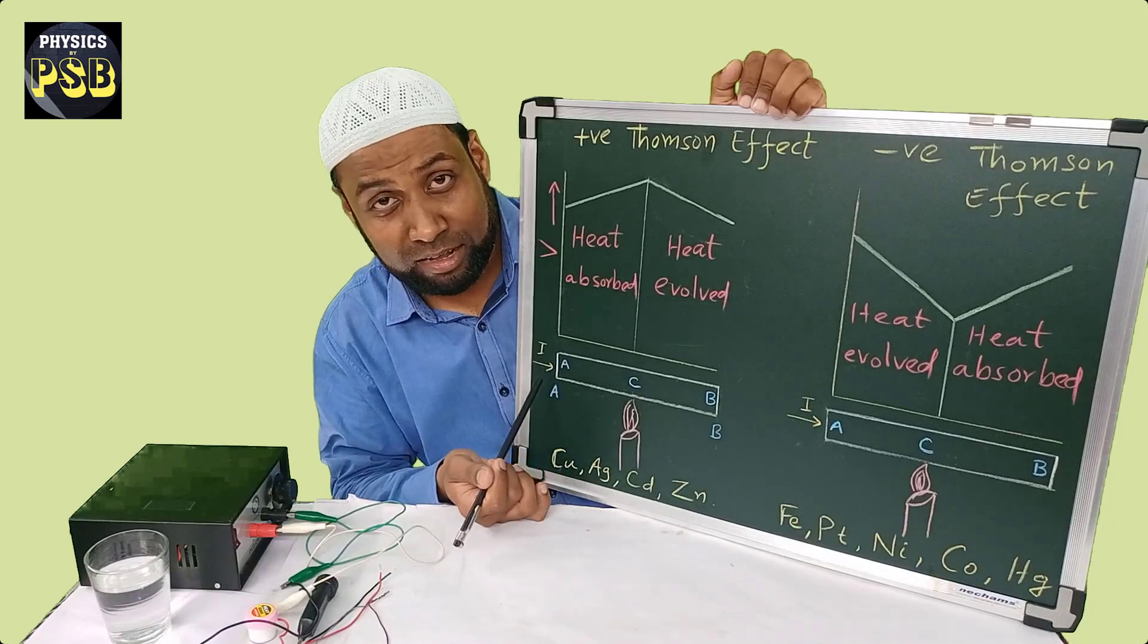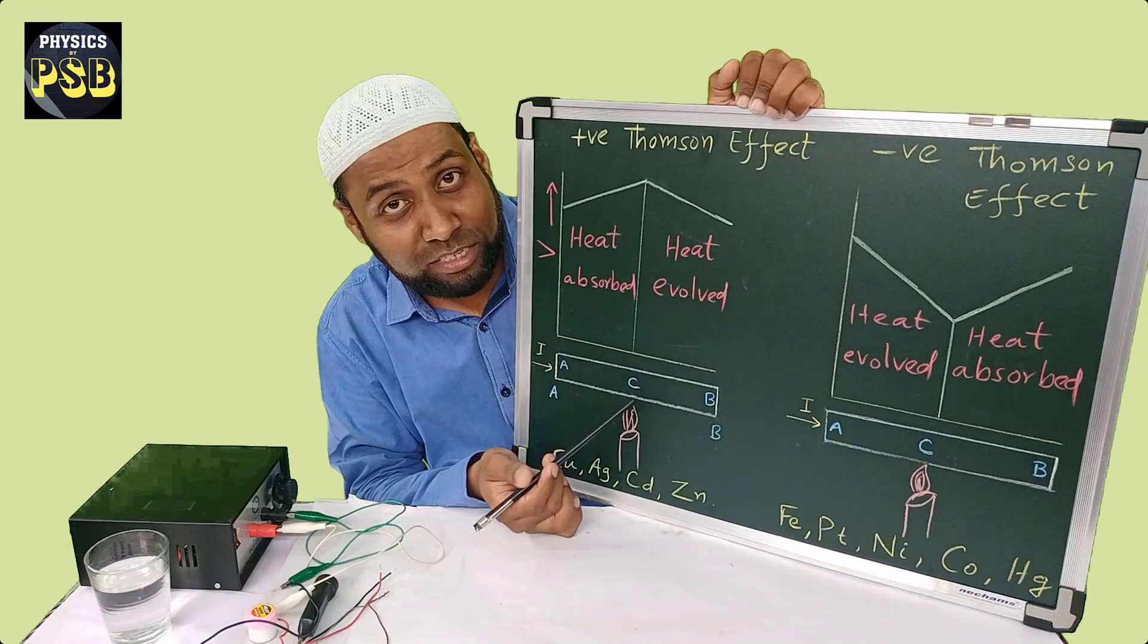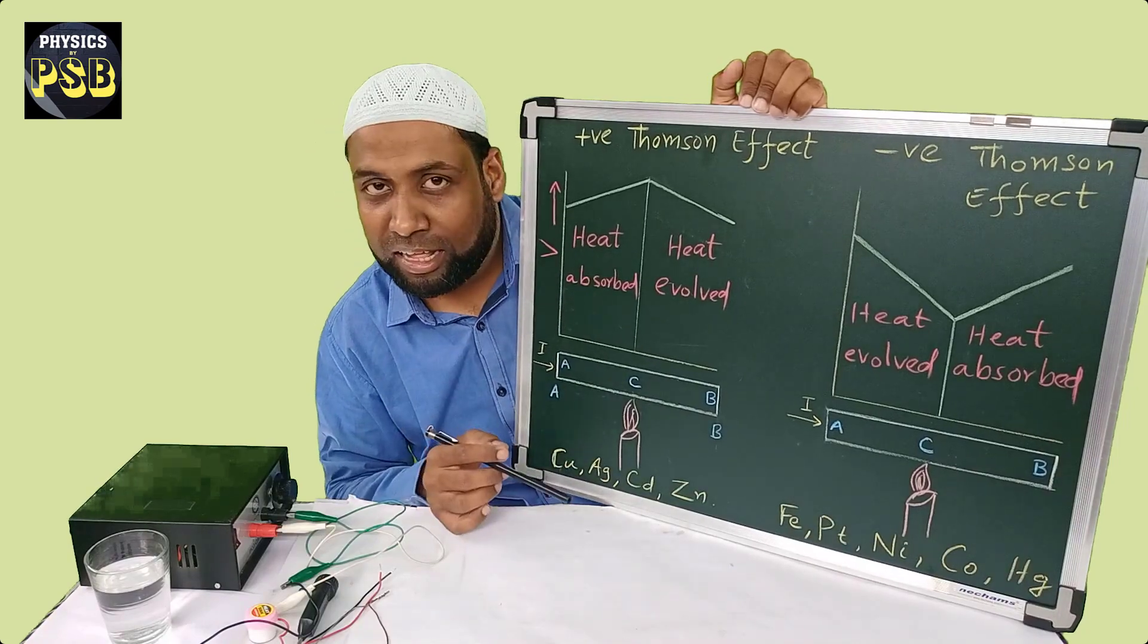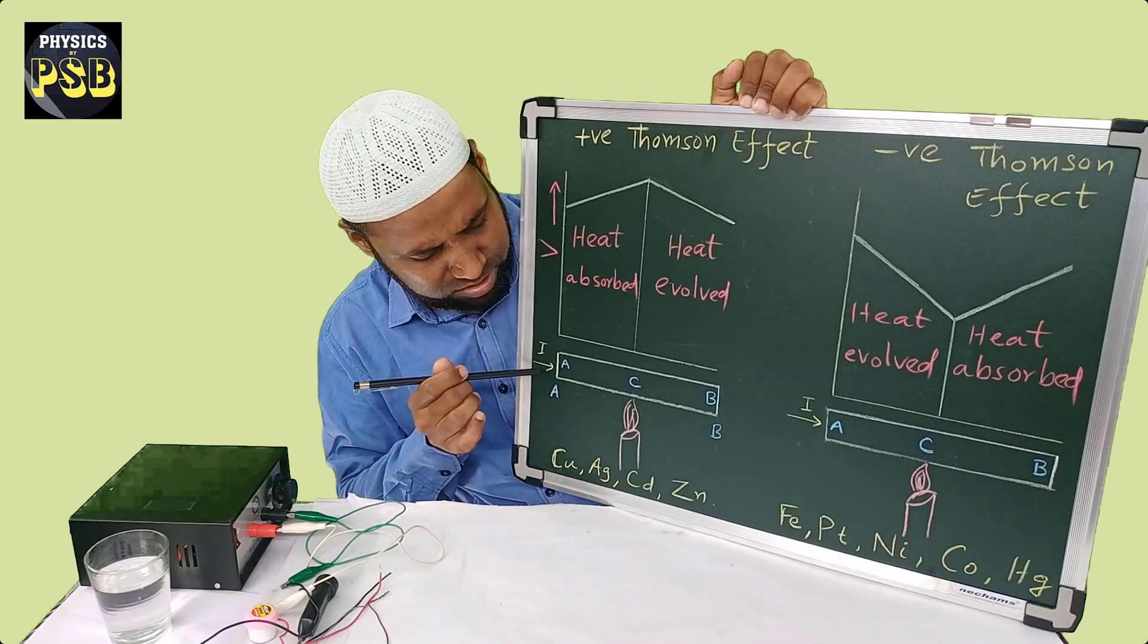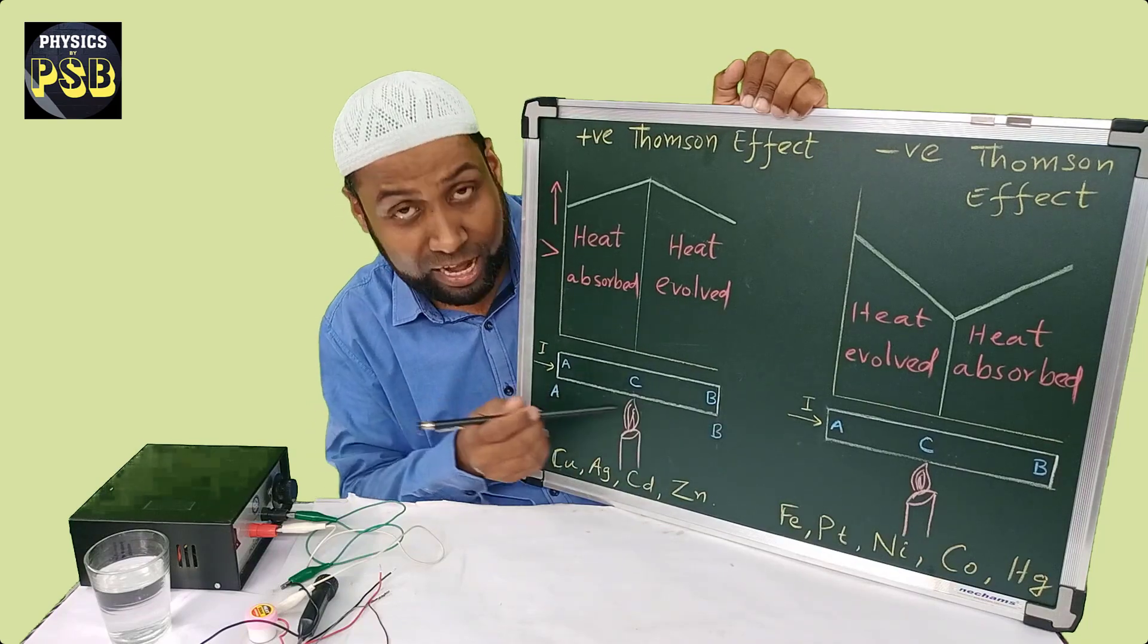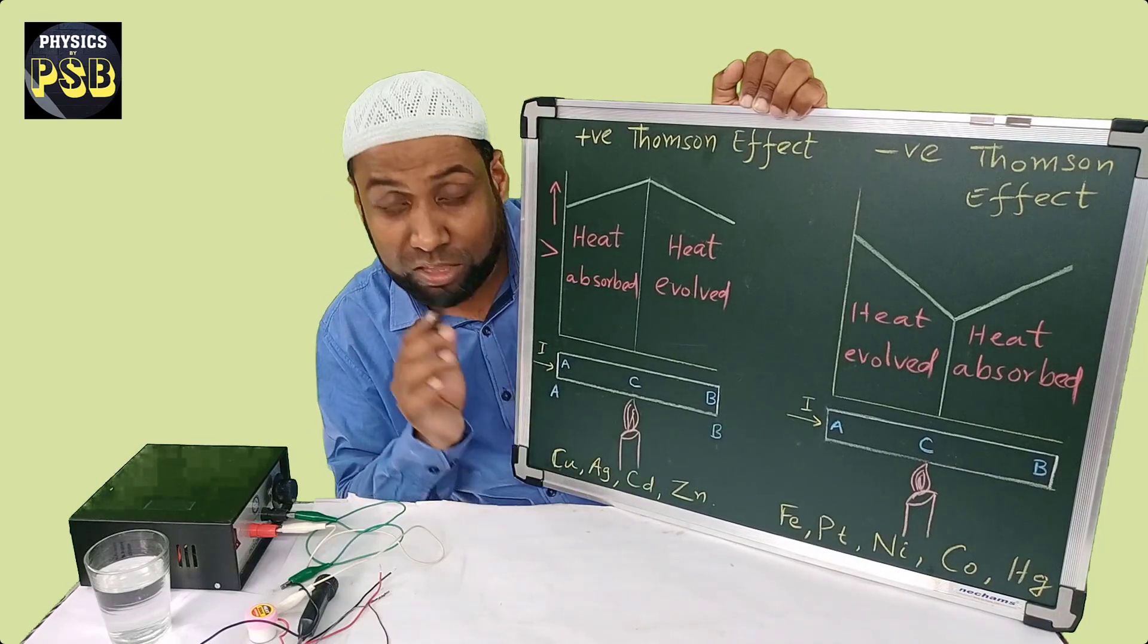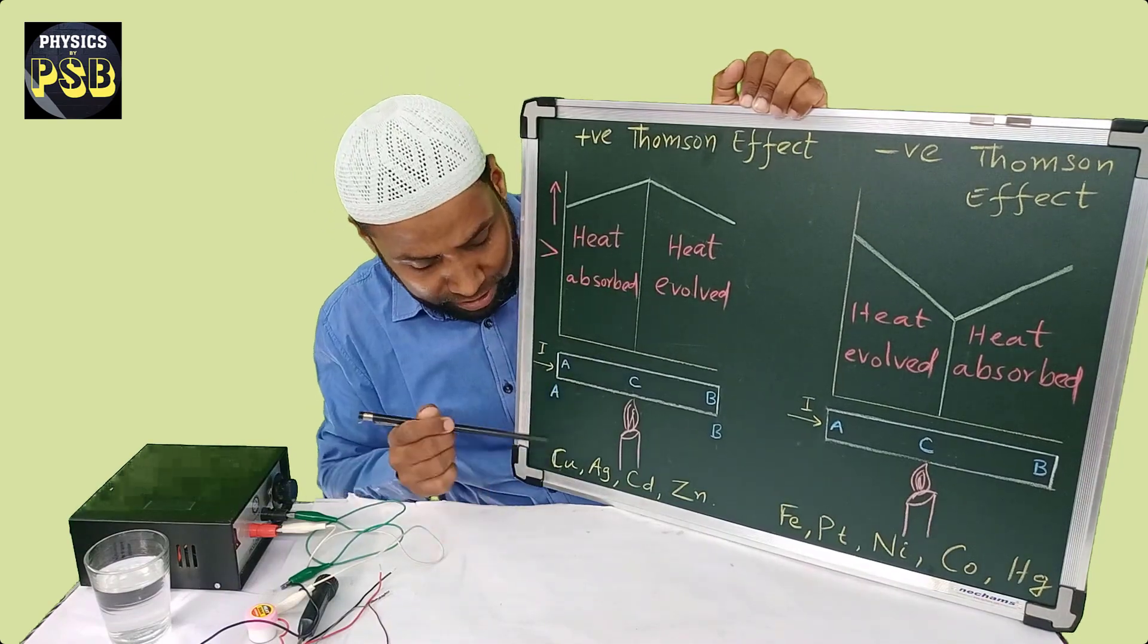The flow of current transfers heat in the metal bar. If the temperature increases along with the direction of current, then we call the phenomena as positive Thomson effect. It is observed in copper, silver, cadmium and zinc.